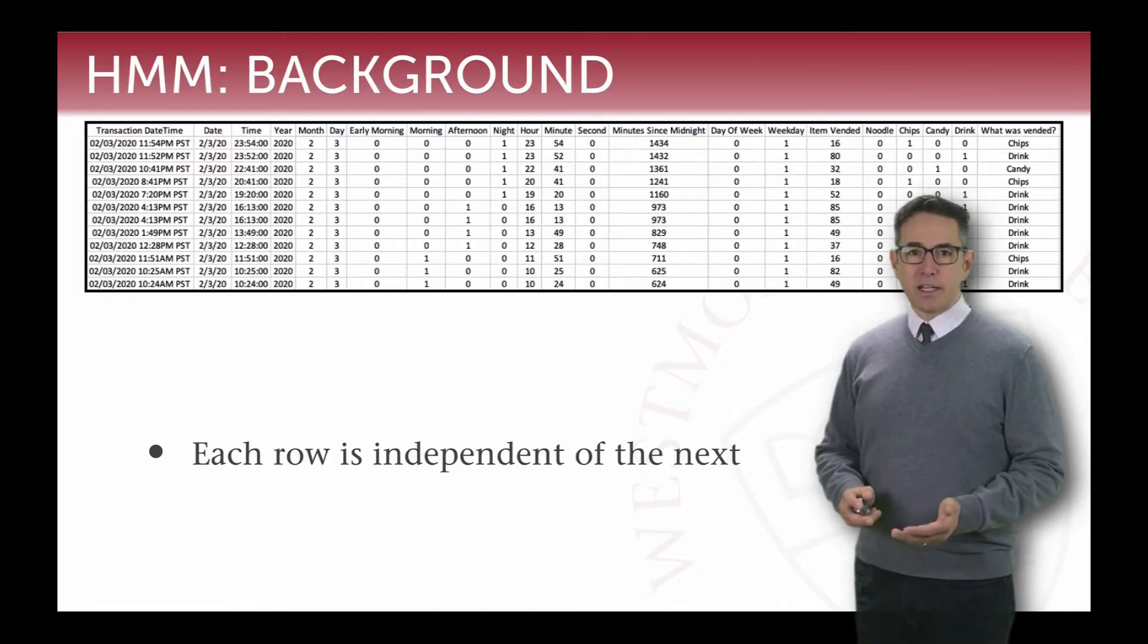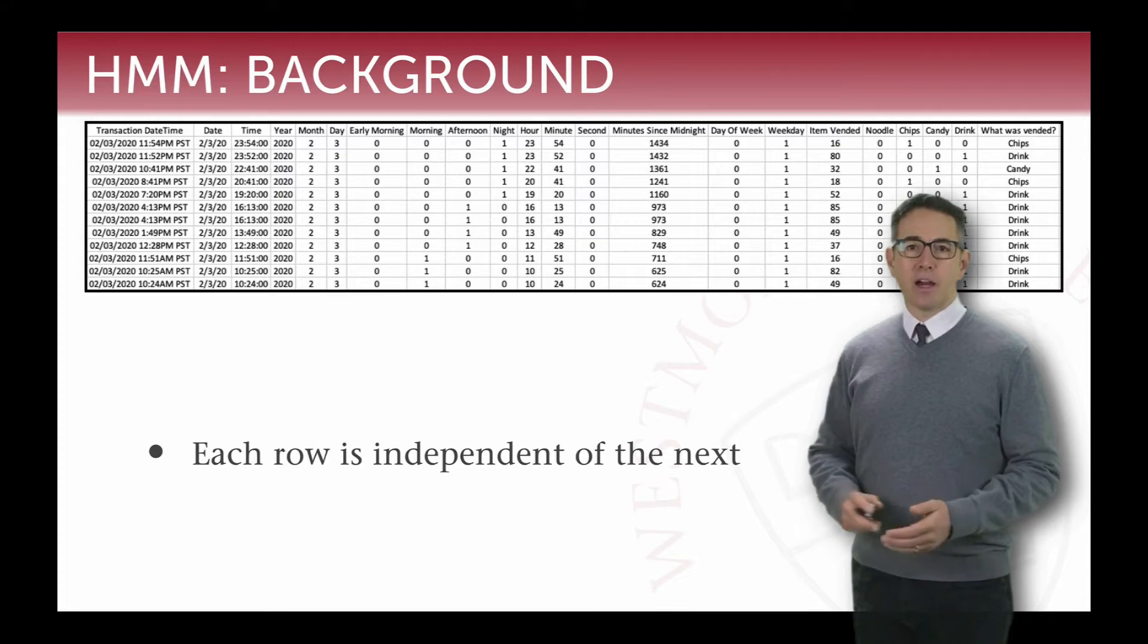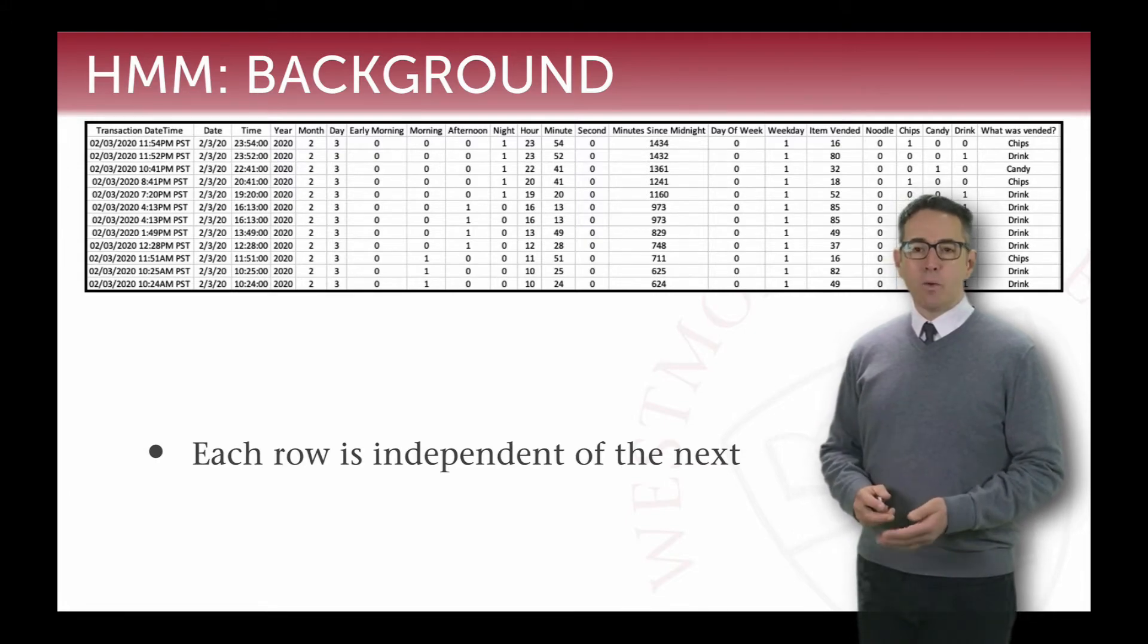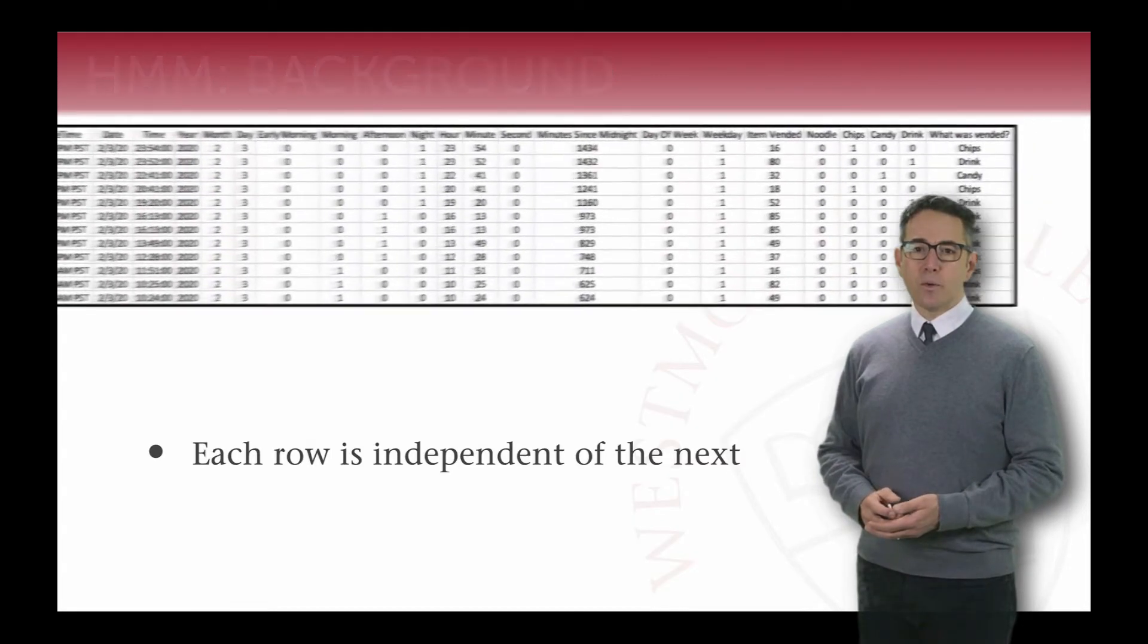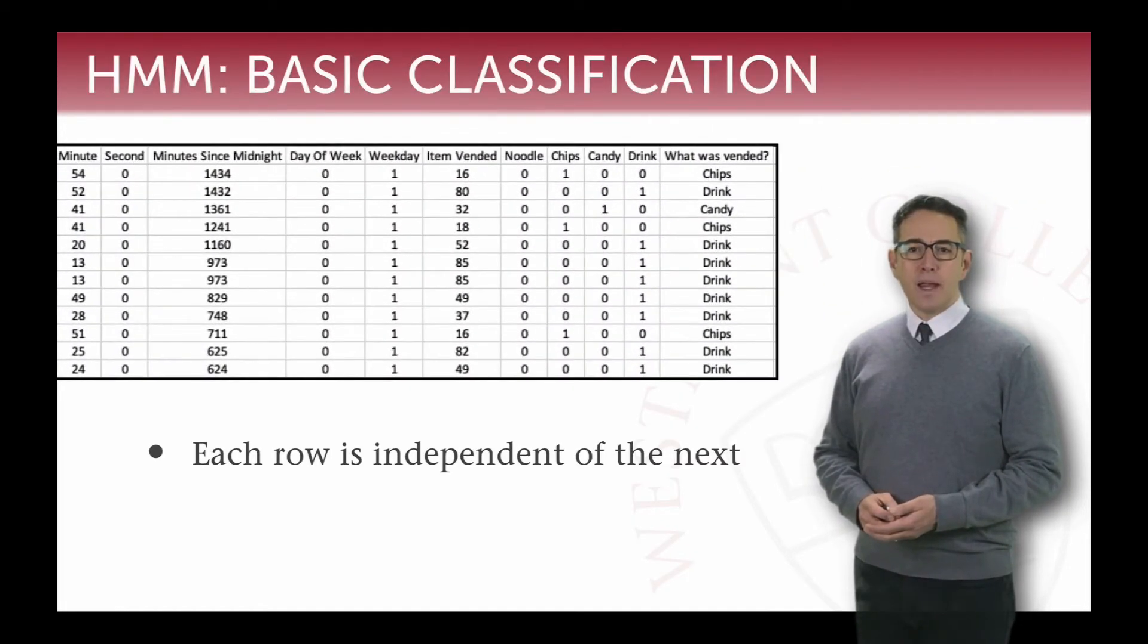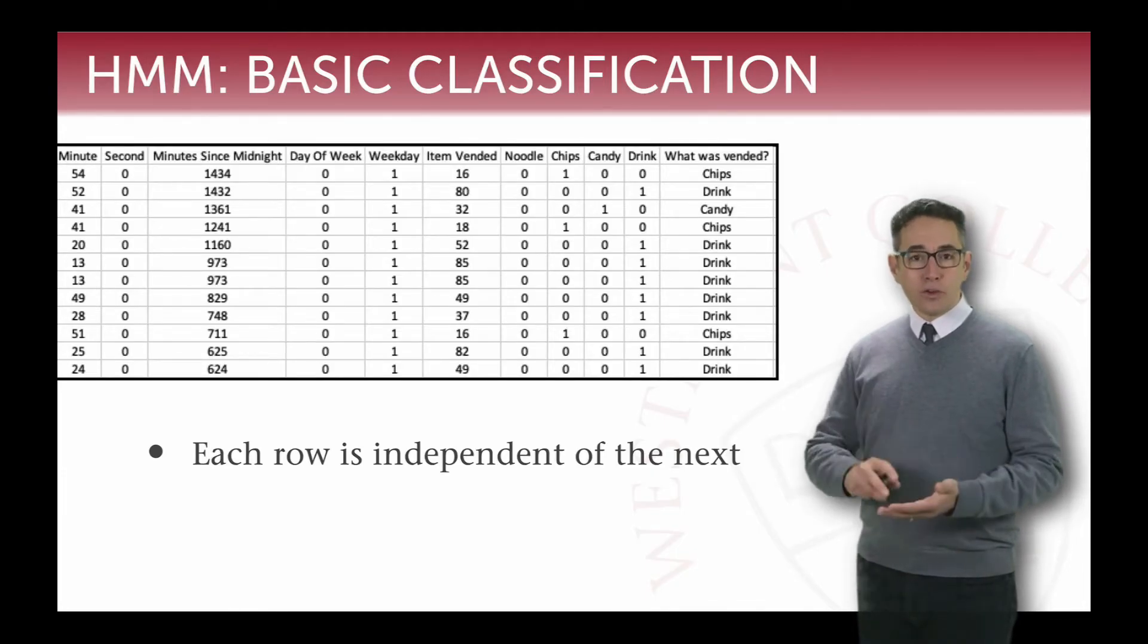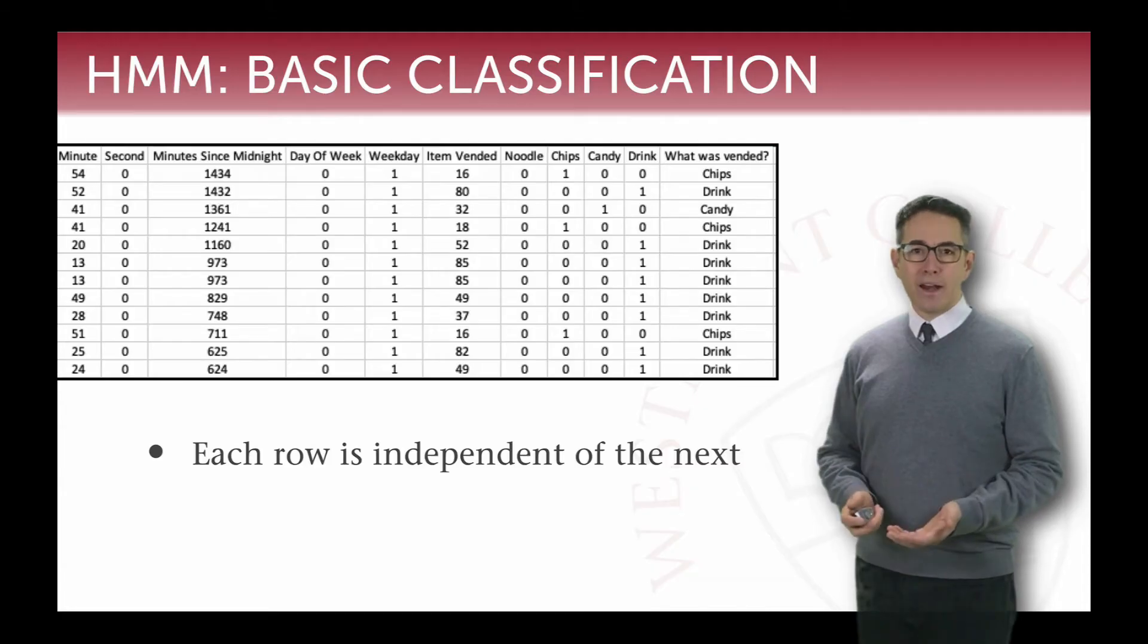But now the thing about this particular data set is that each row was independent of every other row. There was no relationship in our model between what was sold previously and what was sold next. And so when we looked at this data in depth, we had these different things that we were trying to predict, but the fact that the rows were in a particular order didn't matter to any of the classification techniques that we used.